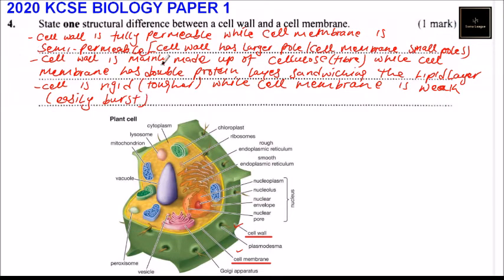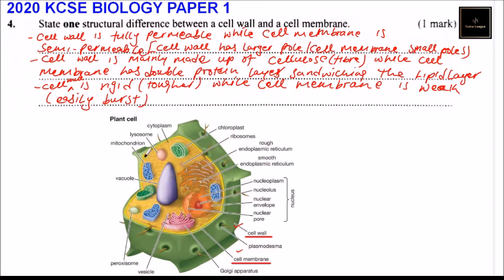So if you mention any of the three: the cell wall is fully permeable while the cell membrane is semi-permeable; the cell wall has larger pores while the cell membrane has smaller pores; the cell wall is mainly made up of cellulose while the cell membrane has a double protein layer sandwiching the lipid layer; or that the cell wall is rigid and does not break easily while the cell membrane is weak and flexible. The cell wall is also thicker compared to the cell membrane. Mention any one and you'll score one mark.